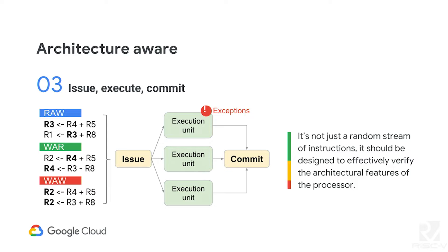As a final example of architectural awareness, you may have different hazard conditions which cause trouble in your issue, commit, or execute stages. You might also have exceptions in the middle, meaning you need to clean up your pipeline and reset the execution engine. We design all of this based on architectural features. At the end, it's not just a binary random instruction stream — it's generated on purpose to verify something specific.